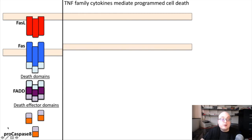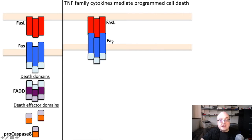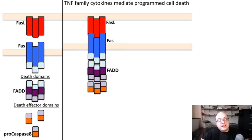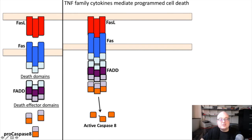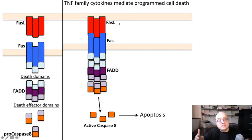Procaspase-8 — the "pro" means it's immature and not quite ready to signal yet. But once this signaling complex is engaged — FAS-L binds to FAS, the death domains recruit FADD, and FADD recruits Procaspase-8 — this triggers an enzymatic reaction which cleaves Caspase-8, getting rid of the death effector domains. This cleaved Caspase-8 is now the active form, and through downstream signaling, Caspase-8 goes on to promote apoptotic programmed cell death. This is a really important immunological example of how a TNF family cytokine induces death as an effector function of an immune response.